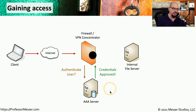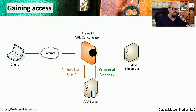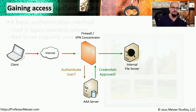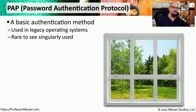Once it performs that check, it'll send a message back saying those credentials have been approved or disapproved. In this case, the correct username and password was provided, and the user's request is then sent on to the internal file server. One way to provide that authentication between the VPN concentrator and the AAA server is a very common protocol known as PAP.